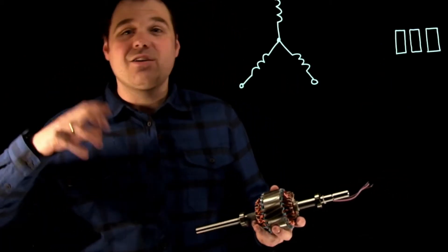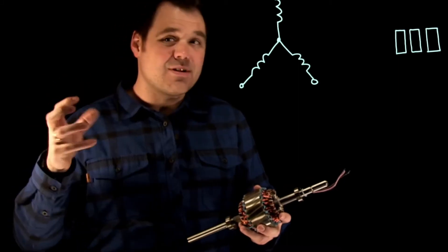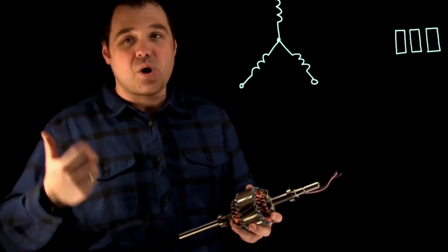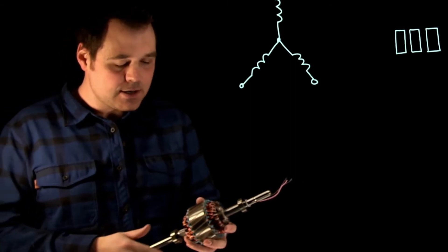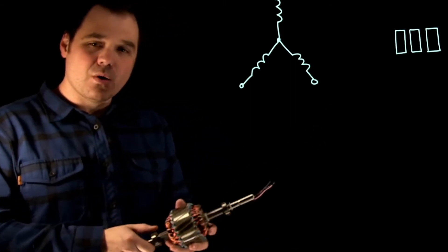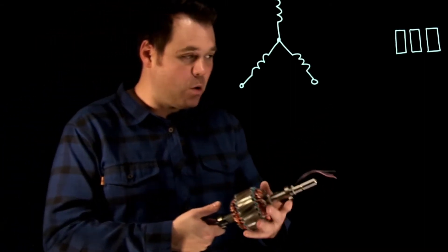So now in a standard rotor, we have our end rings, and they conduct our rotor bars together to short them out at the end. But in a wound rotor motor, now it's a special application motor, but it looks like this.